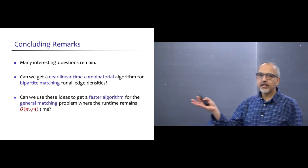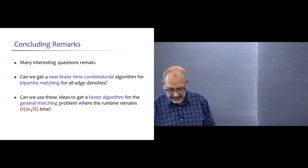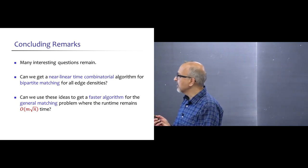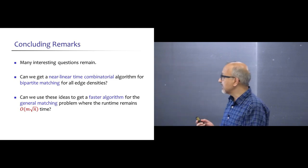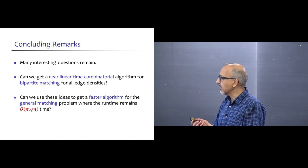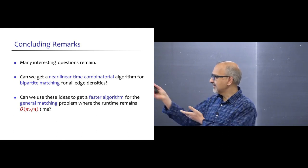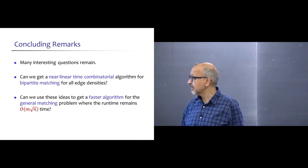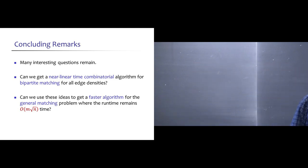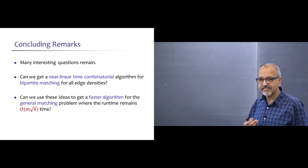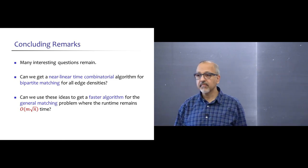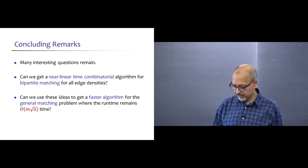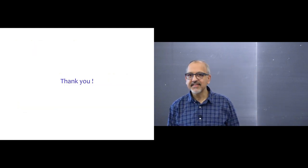Many interesting questions remain. We ultimately would like a near-linear time combinatorial algorithm for bipartite matching at all edge densities, not just for very dense graphs. A really exciting and very difficult question is whether these ideas can give some progress on the general matching problem, where we remain stuck at O(m√n) time for 50 years or so. That's all I wanted to say. Thank you.